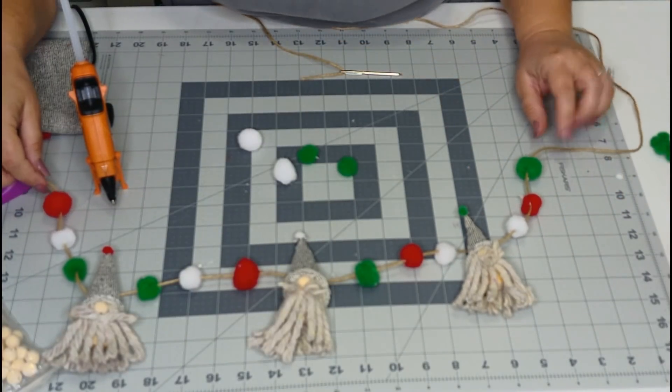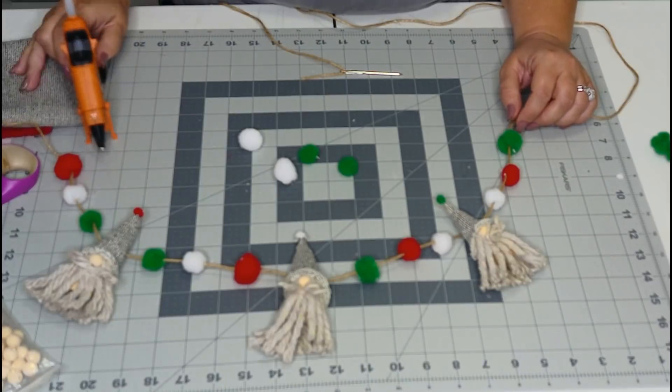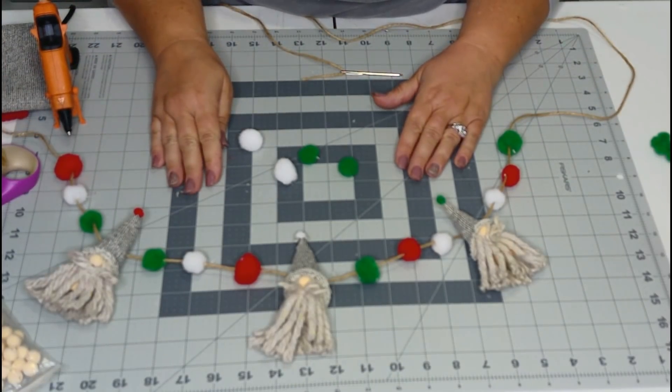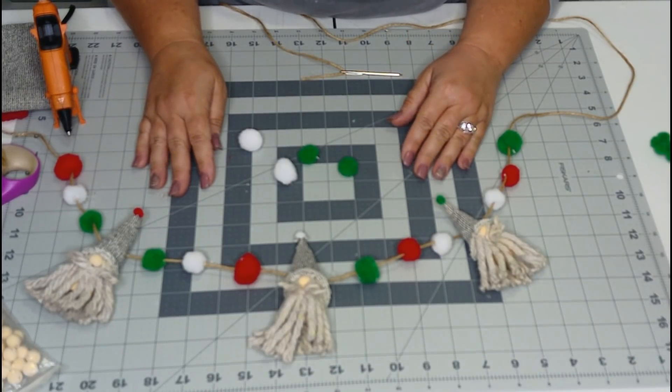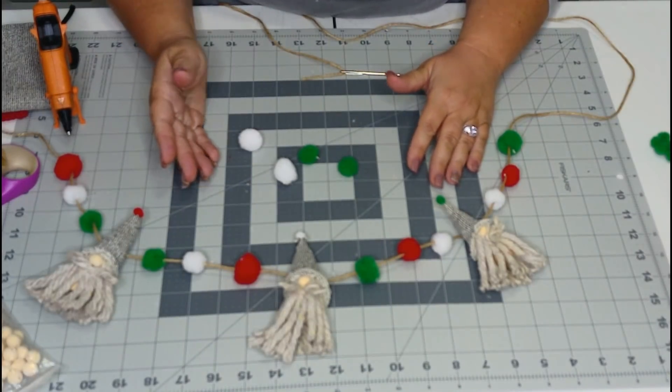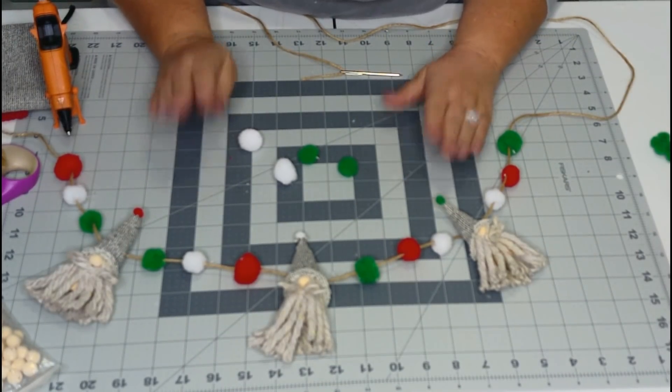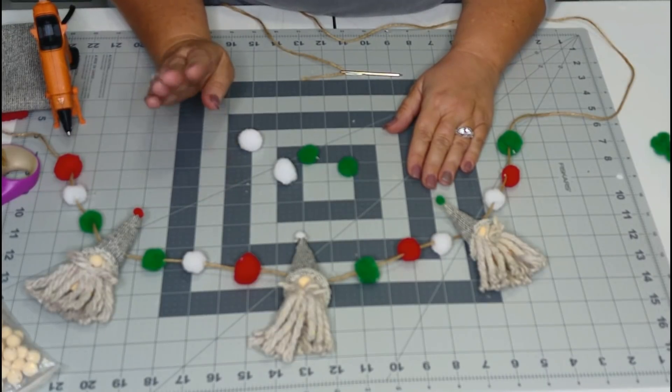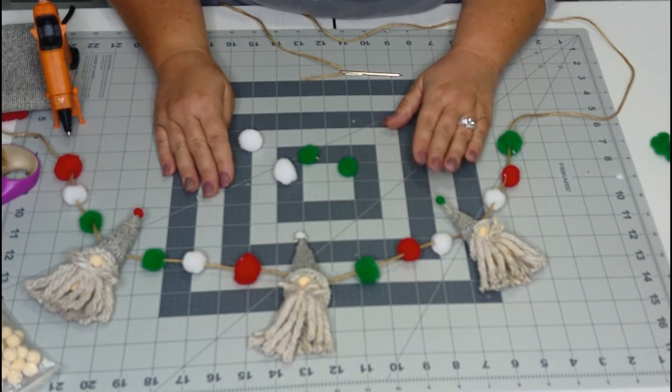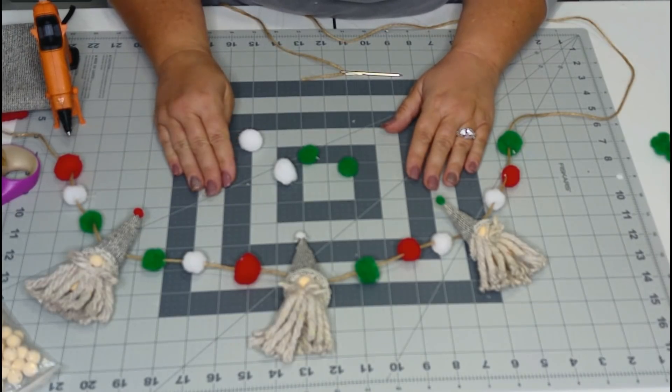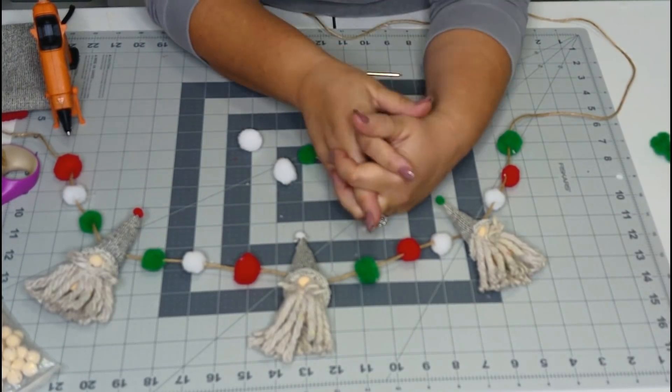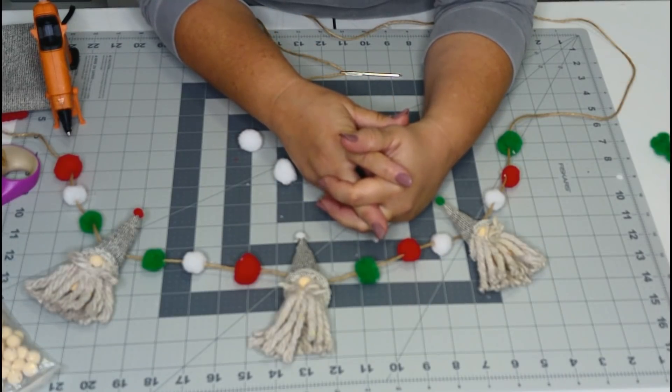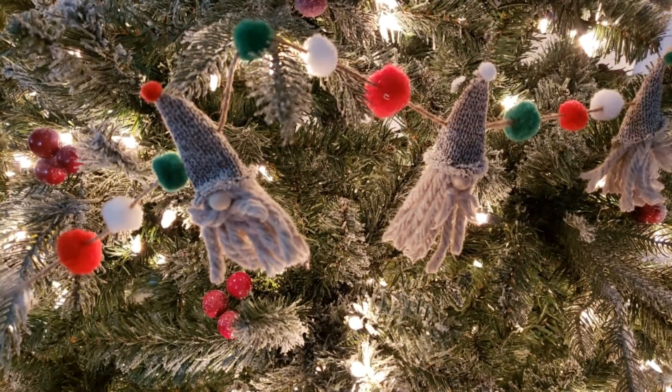But y'all, this was just a quick and easy little garland. And like I said, the one from Pottery Barn does retail for $39.50, I believe. And I've got roughly a couple of dollars in this one. Totally cute. The gnomes are all the latest rage this season. And this is going to go great on the little mini trees from the Dollar Tree. So y'all, I hope you enjoyed this video. If you did, be sure to give it a big thumbs up because that would mean the world to me. And until next time, happy DIYing y'all. Have a great day.